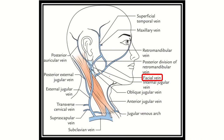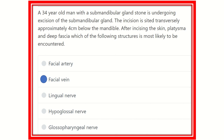Here we can see the lower end of the mandible, and 4 cm below the mandible — in this area — this vein may be encountered, and this is the facial vein. So our answer is the facial vein. The facial vein will be encountered after incision of the skin, platysma, and deep fascia. It is 4 cm below the mandible, that is, the lower border of the mandible where the submandibular gland is located. Thank you all.